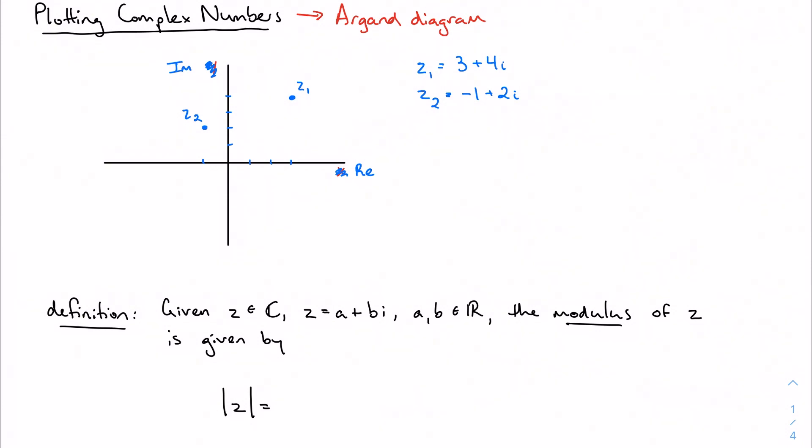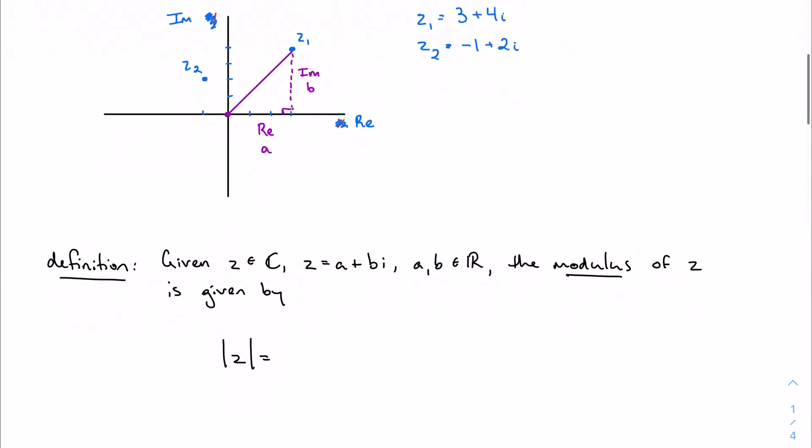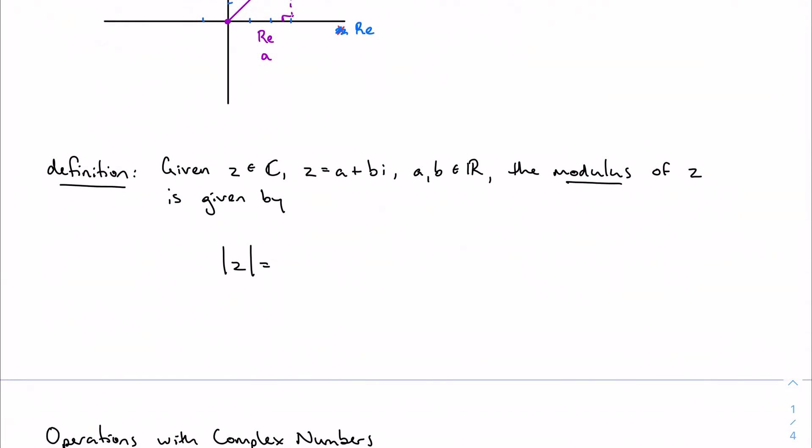We can talk about the distance from this complex origin. If I want to talk about the distance from my origin to the complex number, I have some real distance, maybe we'll call it a, and some imaginary distance b. Now we've got a right triangle that looks a lot like the Pythagorean theorem and the distance formula. The modulus of z is given by this absolute value of z notation, and we simply do a squared plus b squared.